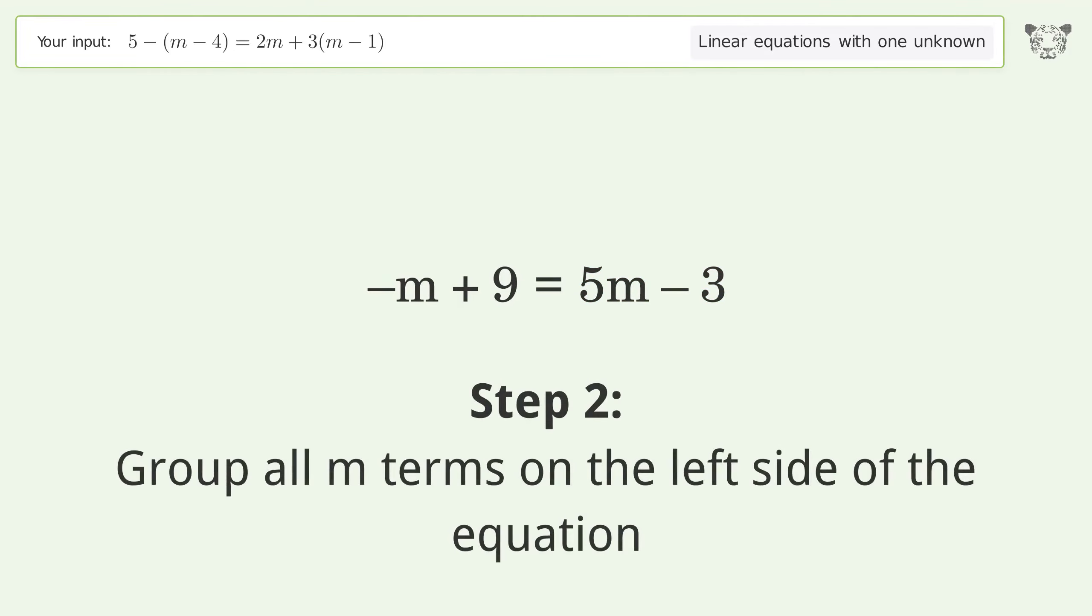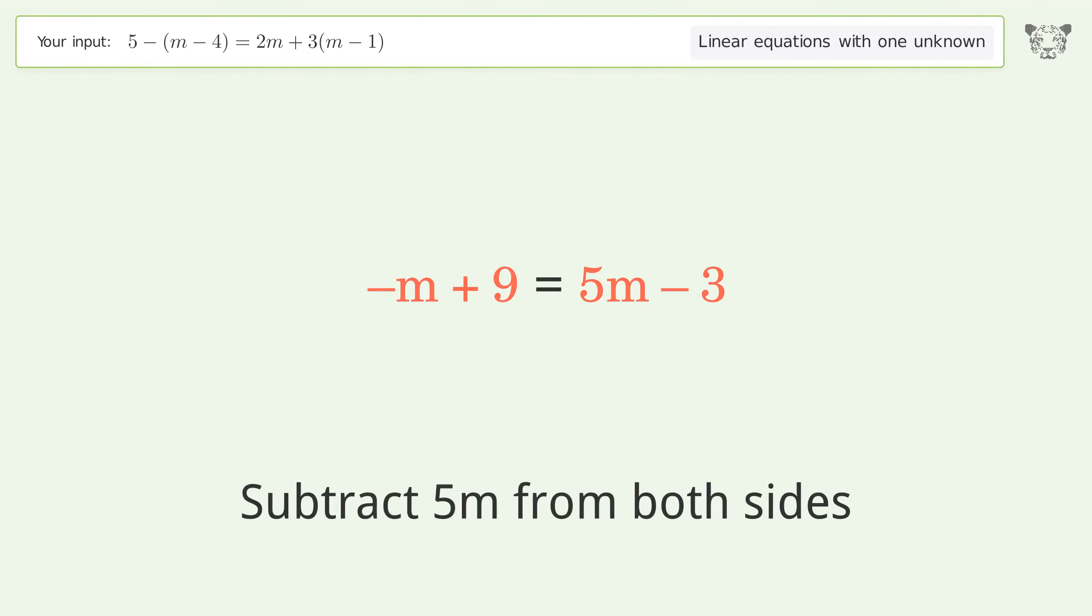Group all m terms on the left side of the equation. Subtract 5m from both sides.